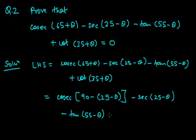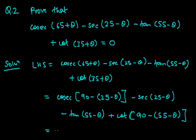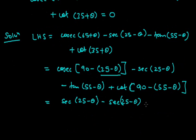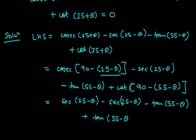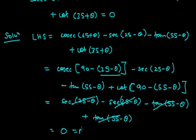We keep sec(25 - θ) as it is and do not convert it. Similarly, we convert cot(35 + θ) as cot(90 - (55 - θ)), and since cot(90 - θ) = tan θ, it becomes tan(55 - θ). So LHS = sec(25 - θ) - sec(25 - θ) - tan(55 - θ) + tan(55 - θ) = 0 = RHS. Hence proved.